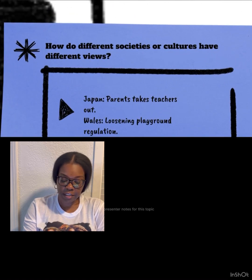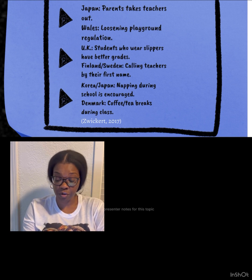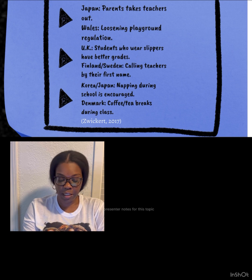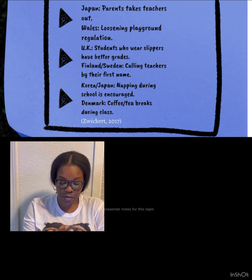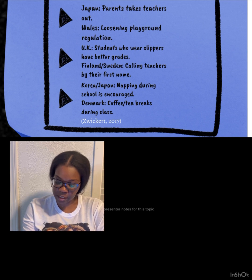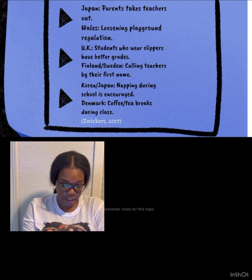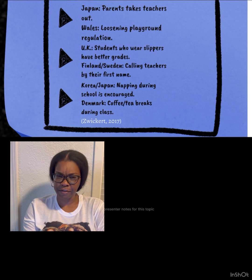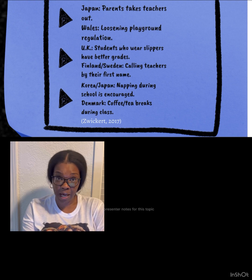How do different societies or cultures have different views? In learning in Japan, parents take teachers out — they say it helps build stronger relationships. In Wales, loosening playground regulation is believed to help students be independent. In the UK, students who wear slippers have better grades; studies showed that comfort level increases attention span. And in Finland and Sweden, calling teachers by their first name — I don't think that will fly in the US — is said to create a stronger bond with students.